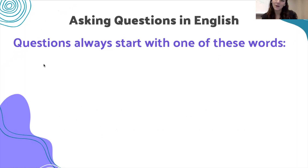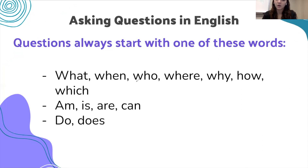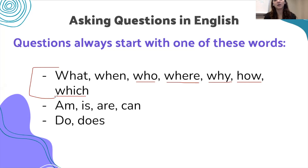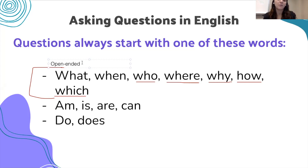Finally, we are practicing asking questions in English. Questions can start with one of these words: 'what,' 'when,' 'who,' 'where,' 'why,' 'how,' and 'which.' These are the question words — they give you open-ended answers, meaning many possibilities. The answer can be a person, it can be a place. Then we have yes or no questions where the answer will simply be yes or no.